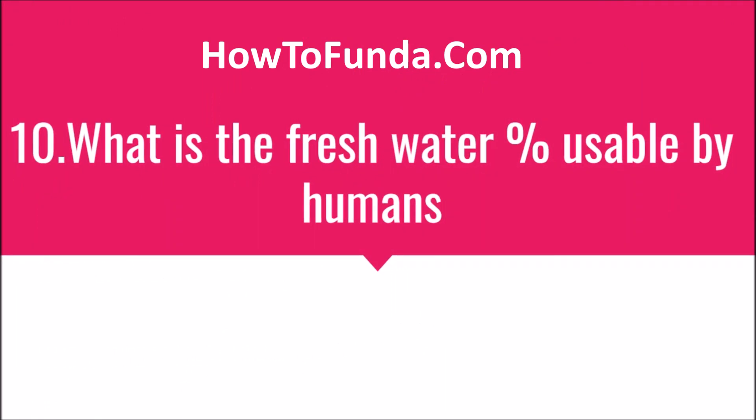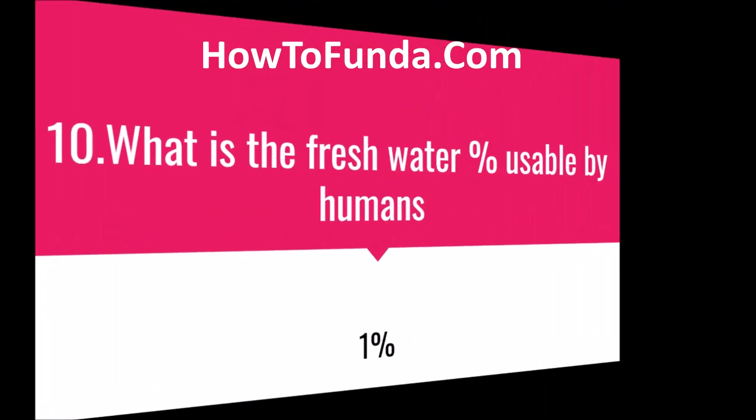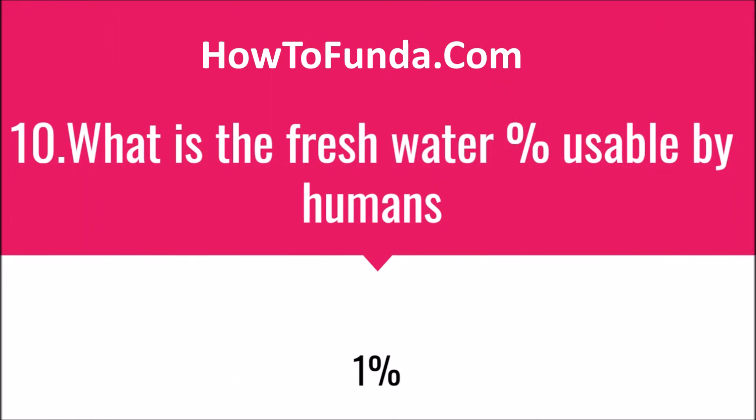What is the fresh water percentage on earth that is usable by humans? Overall, we have 3% fresh water on the earth. But how much of that percentage can humans actually consume? That is only 1% — overall 1% of the water is usable by humans.